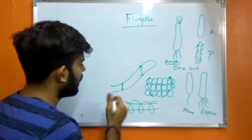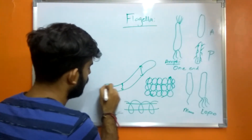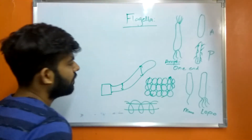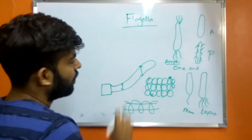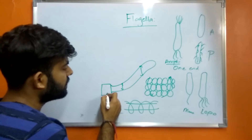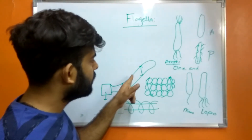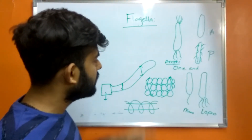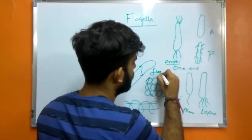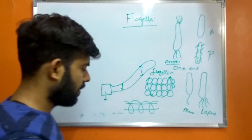Following the filament is the hook. The hook is slightly wider in diameter compared to the filament. The hook is made up of a number of proteins, whereas the filament is made up specifically of flagellin protein.